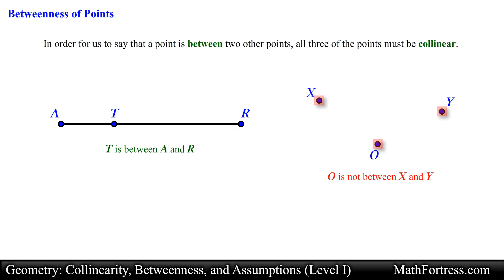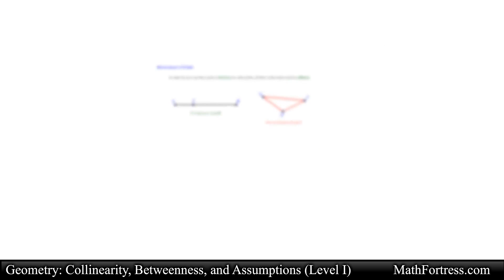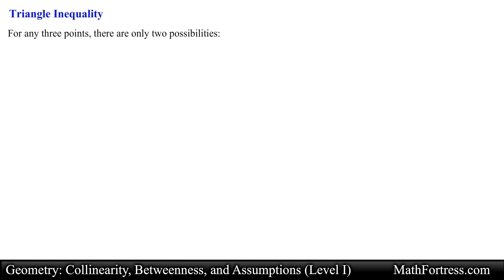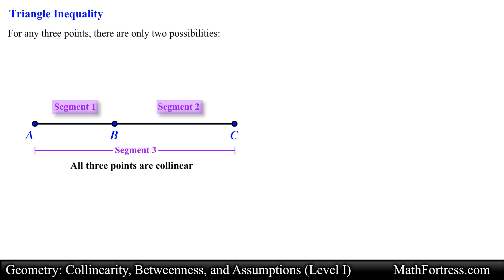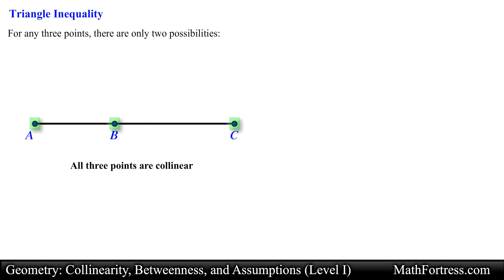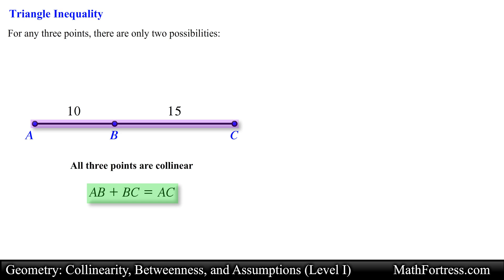Notice that three points that are not collinear form the vertices of a triangle. For any three points there are only two possibilities. The first possibility is that all three points are collinear — that is to say, one point is between the other two. When three points are collinear we can break apart this line into three distinct line segments each with their own length. Two of the lengths add up to the third. For example, if point B is between point A and point C, and segment AB is 10 and segment BC is 15, then segment AC equals 25.